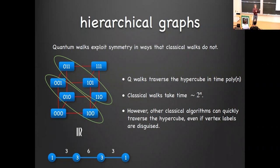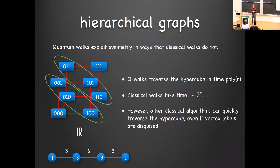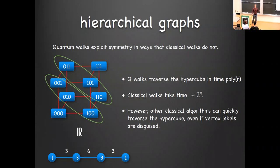In the hypercube, if you start on the all-zero string the quantum walk couples to a superposition over everything of Hamming weight one, then to Hamming weight two, and so on. You have this low-dimensional subspace spanned by uniform superpositions over all strings of a given Hamming weight — dimension n+1 instead of 2^n. This is analogous to Grover's algorithm reducing to a two-dimensional subspace. The graph has some uneven coupling, but being in a lower-dimensional subspace is already very promising and potentially leads to speedups.